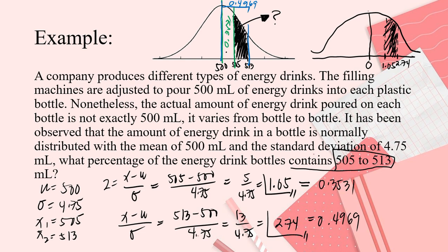You need to subtract. 0.4969 minus 0.3531 and that will be the answer for this side or area. So, let's subtract. Minus 0.3531 and that is 14.38% or 0.1438. Let's not transform it yet. You might get confused.